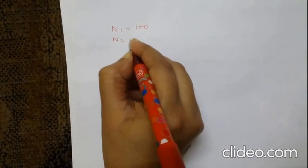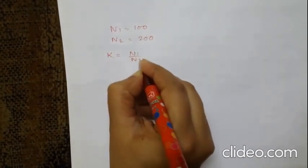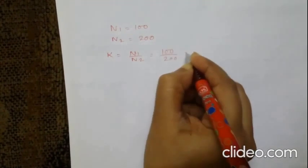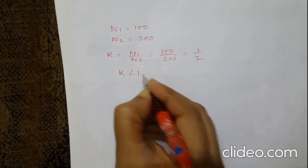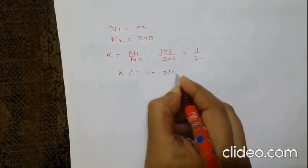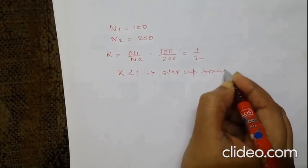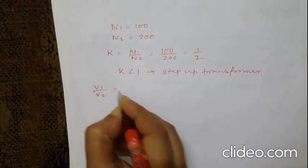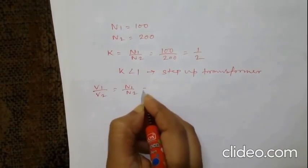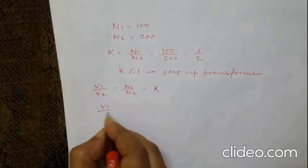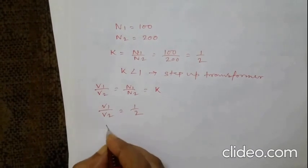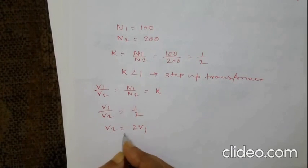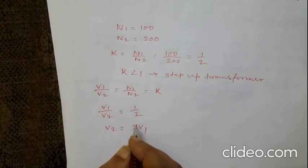For example, suppose N1 = 100 and N2 = 200. Then K = N1/N2 = 100/200 = 0.5, which means K is less than 1, so it is a step-up transformer. From V1/V2 = K = 0.5, we get V2 = 2V1, confirming that V2 is greater than V1, so it is indeed a step-up transformer.